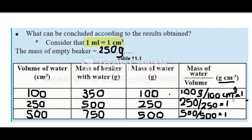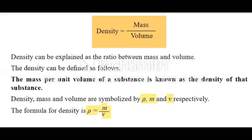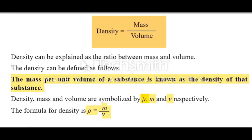Now let's look at the equation of density. Density equals mass divided by volume. The definition of density is that the mass per unit volume of a substance is known as the density of that substance. Density is a specific property of each substance. Density is symbolized by rho, which is a Greek symbol. Mass is symbolized by m, and volume is symbolized by V. Therefore the formula for density can be written as: rho equals m divided by V.